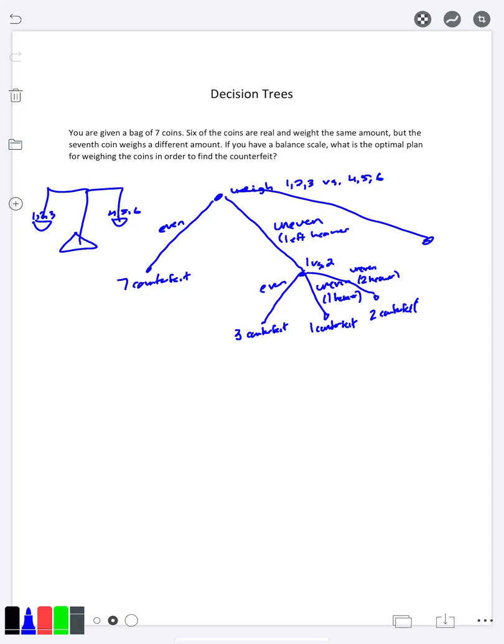The third possibility is that they are uneven and the right is heavier. At that point I could weigh four versus five and have three possibilities: either they're even, left is heavier, or right is heavier. By interpreting this problem in terms of a ternary tree where we give three possible outputs each time, we're able to get a more efficient solution where we just need two weighings to get the answer.